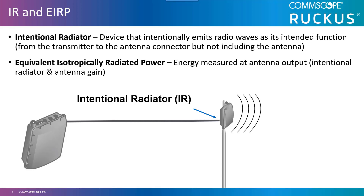The second term with which you need to be familiar is the equivalent isotropically radiated power, or EIRP. It is the theoretical power that is delivered by an intentional radiator to an imaginary isotropic antenna that would produce an even distribution of RF power with the same amplitude actually experienced in the preferred direction of the antenna. All of that really means the power placed in the air, measured at the tip of the antenna.